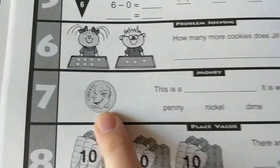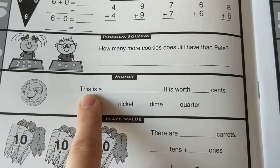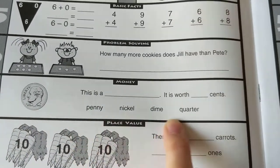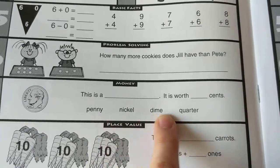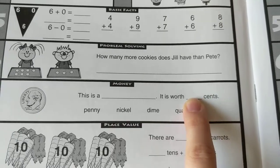Number seven, let's take a look at that. I know that's a coin. This is a, what is the name of that coin though? Penny, nickel, dime, or quarter. It is worth how many cents? Write that down.